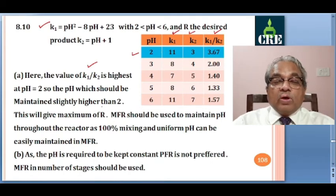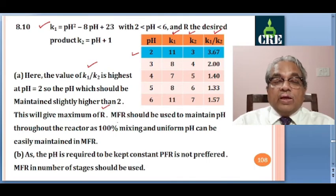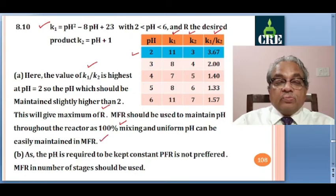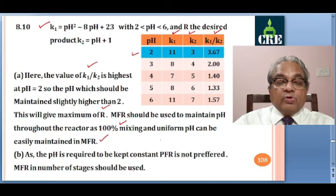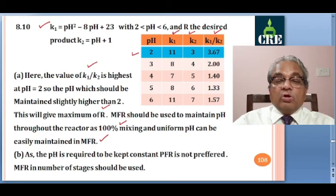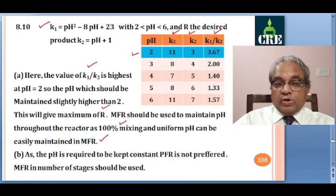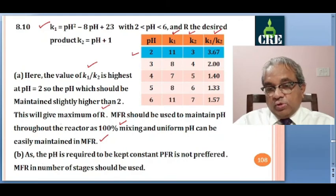A mixed flow reactor should be used to maintain pH throughout the reactor at the desired level, since 100% mixing and uniform pH maintenance can be done only in an MFR. For part B, if pH is required to be kept constant, PFR will not be preferred. MFR can be used, or MFR in a few stages, but not a very high number of mixed flow reactors in series, as that would again lead to plug flow performance.